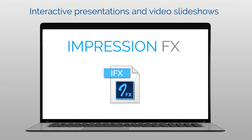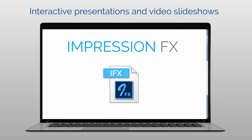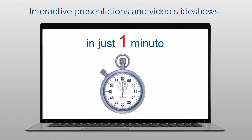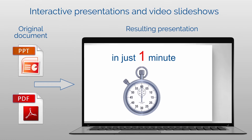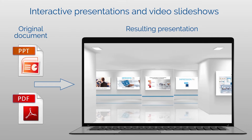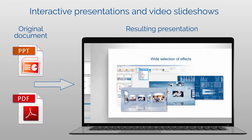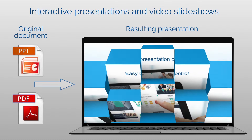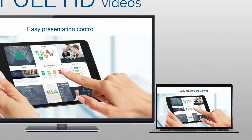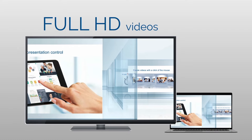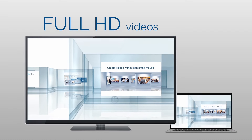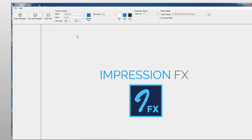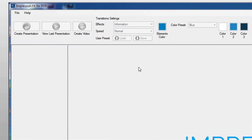Impression FX is software that can turn any PowerPoint or PDF file into a memorable and exciting presentation or video slideshow in just one minute. Impression FX automatically inserts dynamic transition effects between the original slides and adds new interactive controls. Each presentation can be converted into a full HD video with a single click of the mouse.